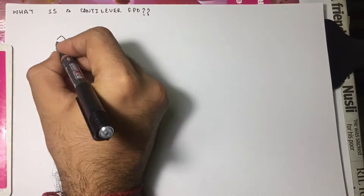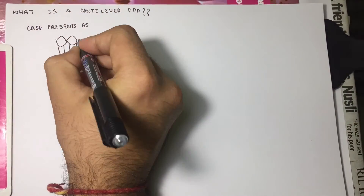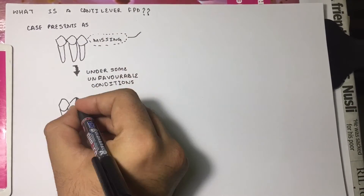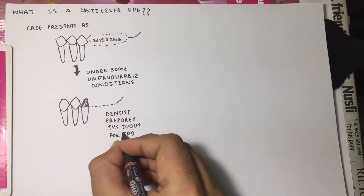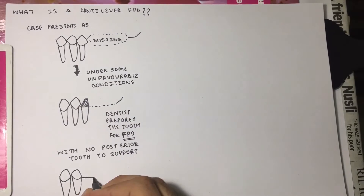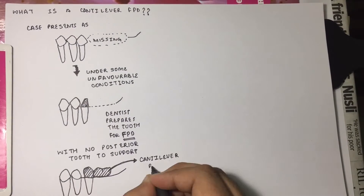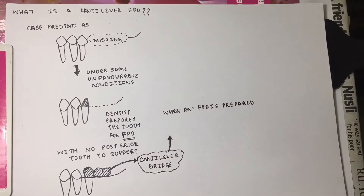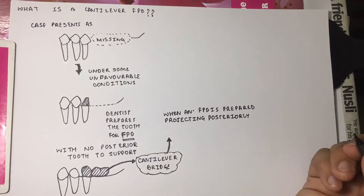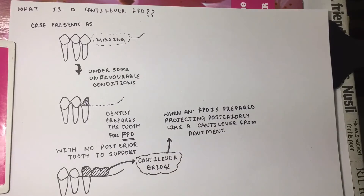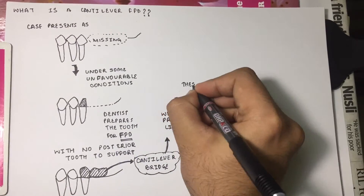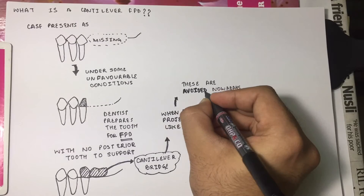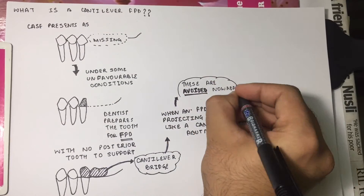What is a cantilever FPD? When posterior teeth are missing, under some unfavorable conditions the dentist prepares the tooth for FPD with no posterior tooth to provide support. This is called a cantilever bridge — when an FPD is prepared projecting posteriorly like a cantilever from the abutment. These are avoided nowadays.